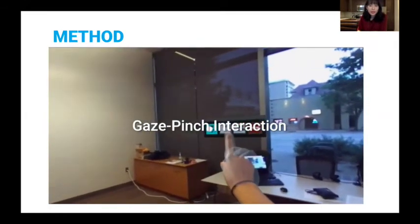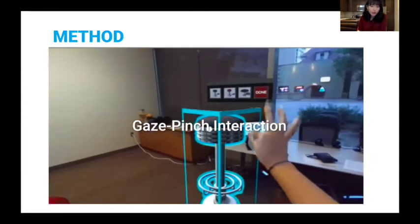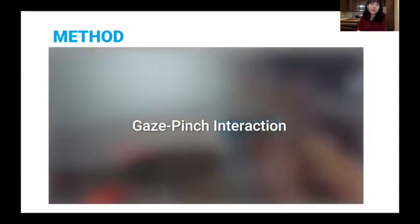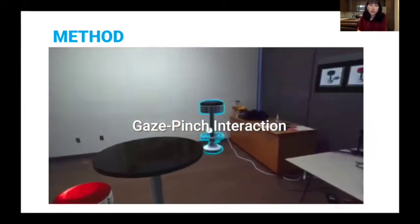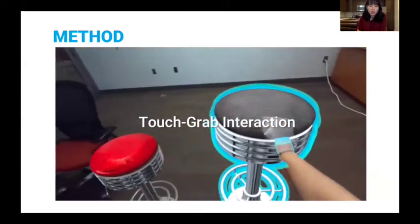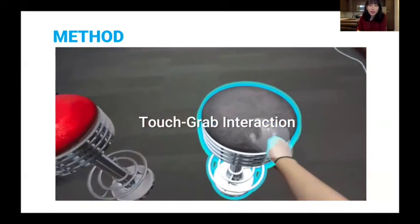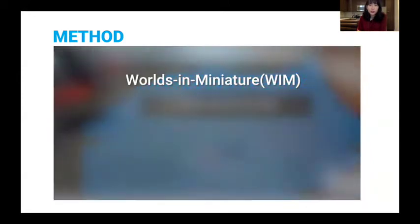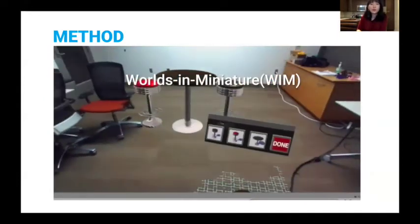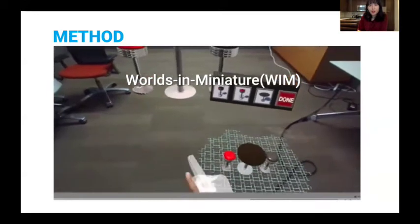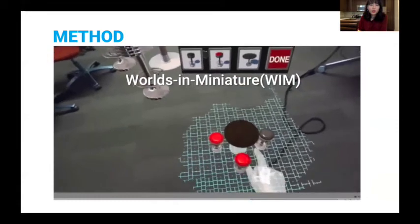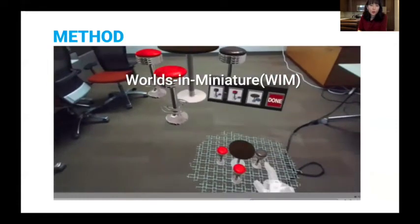This is the video that shows the gaze and pinch interaction. Users could select the item using a gaze cursor, which actually used the head position, and use the pinch gesture to move the object. And touch-grab interaction, users can just directly touch and grab it. And world-in-miniature, users were supposed to scan the environment first, and select the miniature object and could move the large scale item that moves along with it.